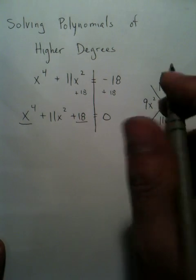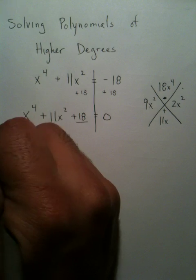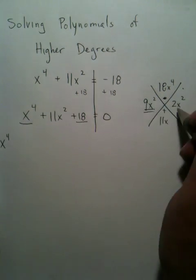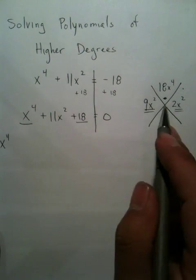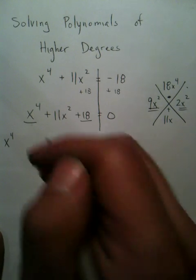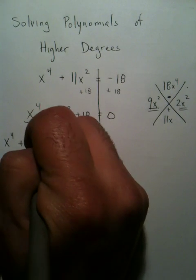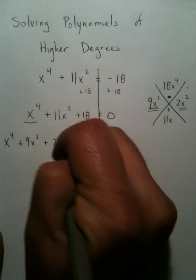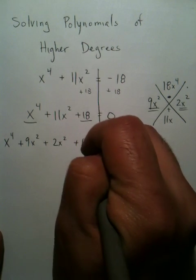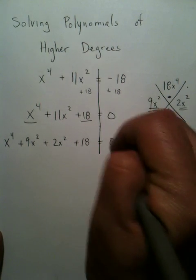So what you're going to do is take your first term and replace this middle term with the two terms you put in your magic X. So you're going to have a positive 9x², a positive 2x², and then your positive 18. That's going to equal zero.